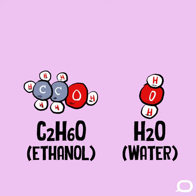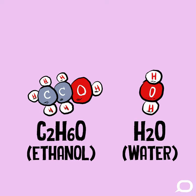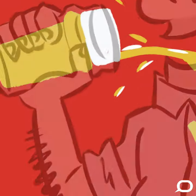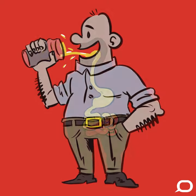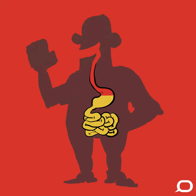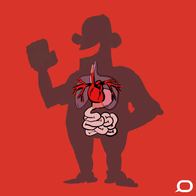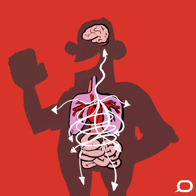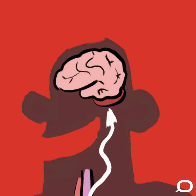The ethanol molecule is small and highly water-soluble, and because it's so small, when we drink it, it's very easily absorbed in our gut and distributed in the blood to virtually all the organs and tissues of our body, including the brain.